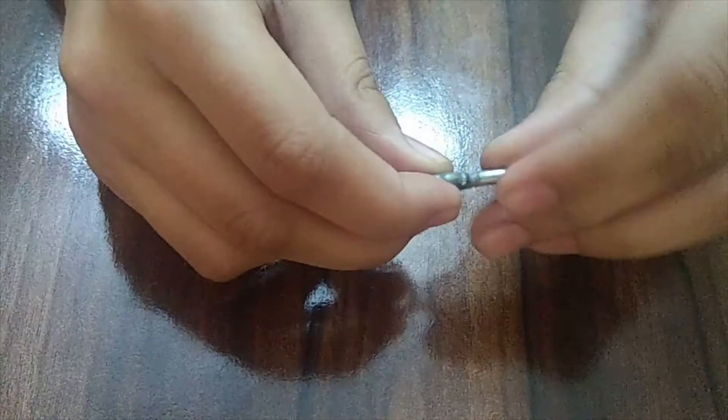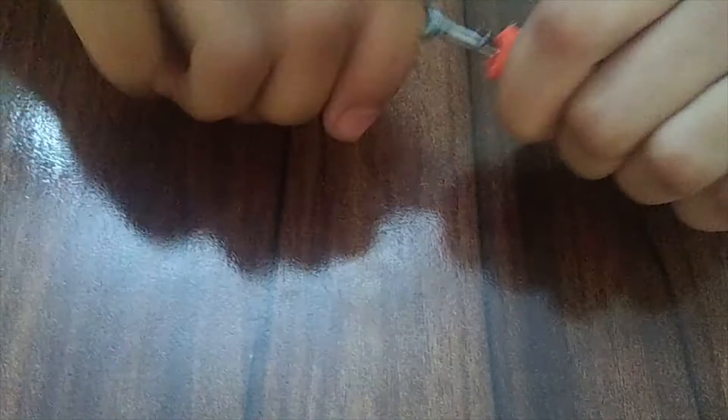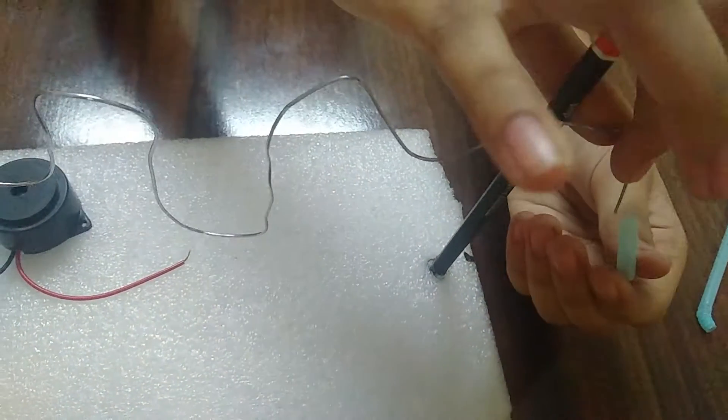Now take the hook and turn it around the wire. Now fix it to the plastic piece. Insert two small straw pieces through the metal wire.